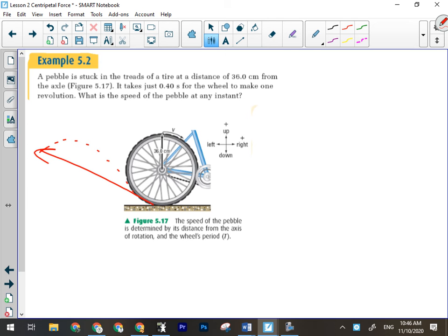So if we're looking at this question here, this isn't actually about the centripetal force. This is just about circular motion in general. Pebble stuck in the treads of a tire 36 centimeters from the axle. It takes 0.4 seconds for the wheel to make one revolution. What's the speed of the pebble? They're wanting us to calculate V. They're giving us R. What else did they give us?